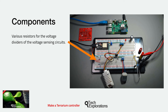I wanted to implement the ability to measure the input voltages of the ESP32 and the motor. This makes it possible to power the terrarium controller from one or two batteries and to generate notifications when the batteries need to be charged or changed. The voltage sensing circuits consist of simple voltage dividers. I'll show you exactly how to define the resistor values and how to implement the necessary voltage calculations in the ESP32 sketch and the Node-RED flow.